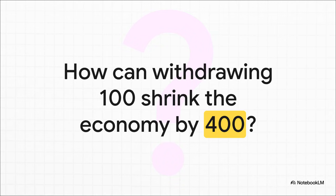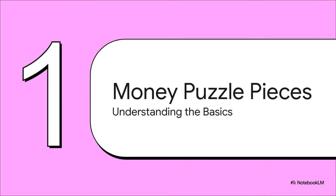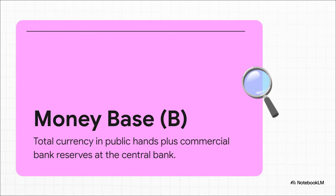The answer is kind of hiding in plain sight, and we're going to uncover it piece by piece. Every good puzzle has its pieces, and to solve this one we first need to get a handle on four key terms that define how money actually works in our world. You're going to want to pay close attention here, because pretty much everything else we talk about builds on this foundation. First up is what's called the money base, which we'll just call B. This is the real, foundational, high-powered money in the whole system — all the physical cash floating around out there, plus the reserves that commercial banks hold at the central bank. You can think of it as the bedrock our entire financial system is built on.